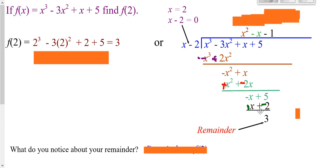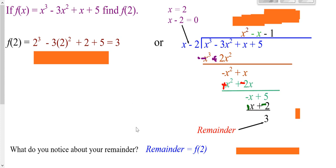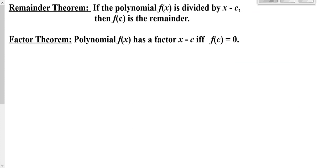Notice how what we got for a remainder is the exact same thing we got when we plugged in directly. What we plug in and simplify down and get out ends up being the remainder after you divide. So when you're looking only for the remainder, you can do longhand division, or there's also synthetic division we'll be getting to, or you can just plug it in — it doesn't make a difference.